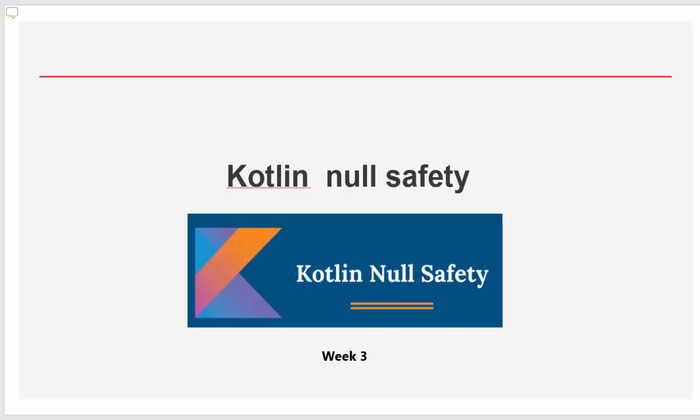How do you declare a variable with nullable property? In Kotlin, the type system distinguishes between references that can hold null values, nullable references, and those that cannot be null, non-null references.